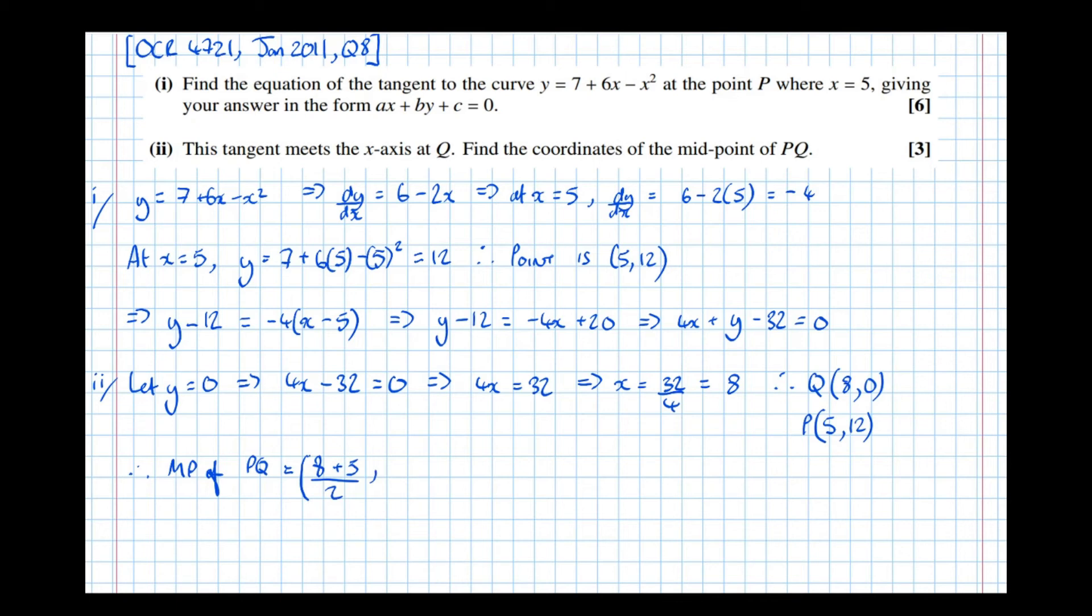To find the midpoint of the x-coordinate. Then 0 plus 12 over 2 for the y-coordinate equals, so 8 plus 5 is 13 over 2, 12 over 2 is 6. And there we have it.